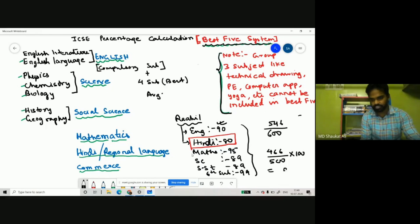Which is 93.2 percent. So in ICSC, Raheel gets 93.2 percent. Now let us see how ISC percentage is calculated.